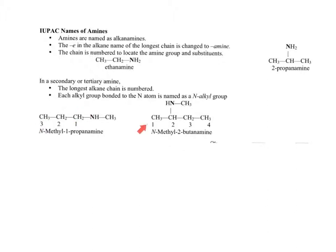In the next example, the longest chain is four carbons long with the nitrogen attached at carbon two, making it 2-butanamine. This nitrogen also has a methyl group coming off, so we would call this N-methyl-2-butanamine.